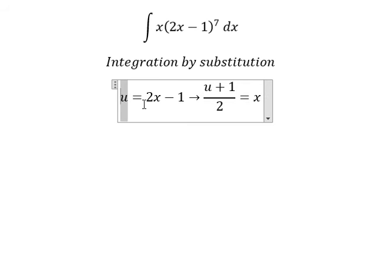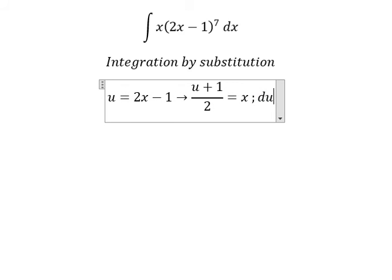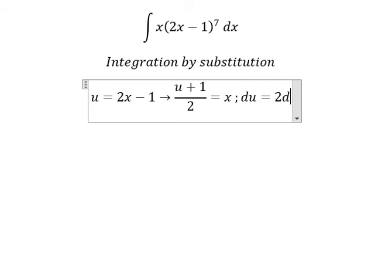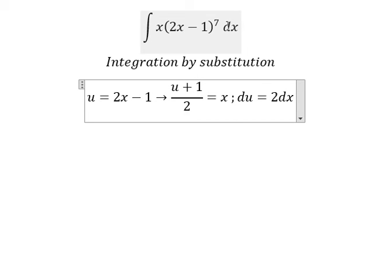Next, we do the first derivative for both sides and we will have du equal to 2dx. Because we don't have number 2 in here, we need to divide both sides by number 2.